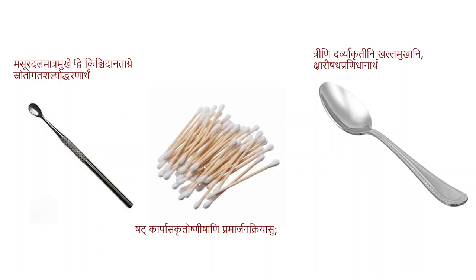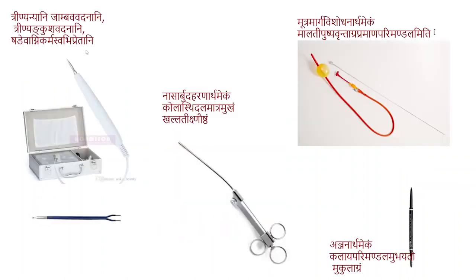Karpasavita ushnisha shalaka are the cotton buds used for swabbing. Jambo vodhana and ankusha vodhana are the types of cautery heads used, and we will discuss more about that later. Nasarbudha harana is a nasal forceps — in the present nasal forceps we use a snare, whereas Sushruta had a curler at the tip. The stilet used in the catheter could be compared to the nutranartham vishodhanartham. Anjanartham is the eyebrow pen. That covers the shalaka yantra.